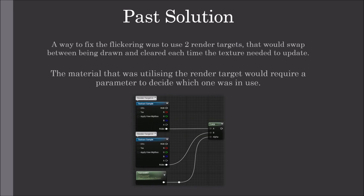A way to fix this was to use two render targets that would swap between being drawn and cleared each time the texture needed to update. The material utilising the render target would require a parameter to decide which one was in use.